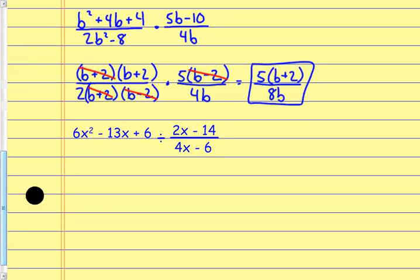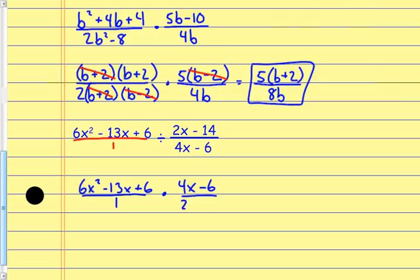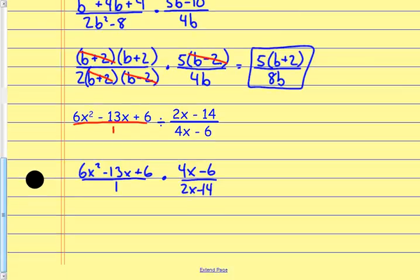For this next example, that first fraction stays the same — we can think of this as being over 1. I change division to multiplying and flip the second fraction, so I multiply by the reciprocal. Now from here I factor everything completely. I'll take the 6x²−13x+6 off to the side.